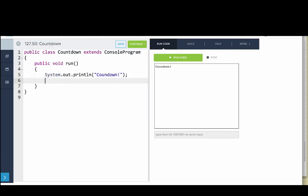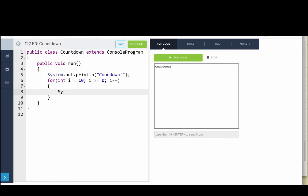Okay, so first let's write the countdown program. So we're gonna say for int i equals 10, i is greater than or equal to zero, i minus minus. And that's system dot out dot println i.